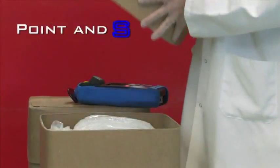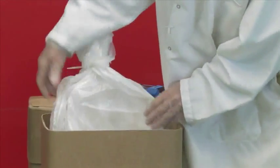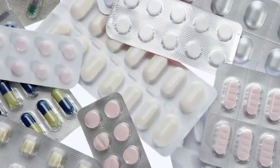TruScan's point-and-shoot operation enables sampling through packaging, such as double-bagged pharmaceutical ingredients in a drum or tablets in a blister pack.